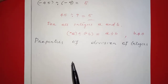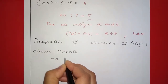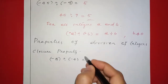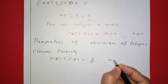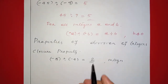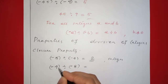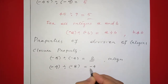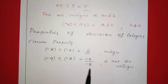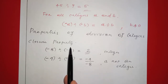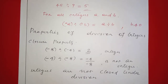Primitive properties — the first property is the closure property. For example, negative 8 divided by negative 4: 8 and 4 divided gives 2, and same sign gives positive. So the closure property is satisfied. But negative 4 divided by negative 8 equals negative 4 over negative 8, which is not an integer. Therefore, integers are not closed under division.